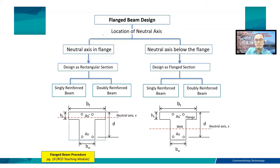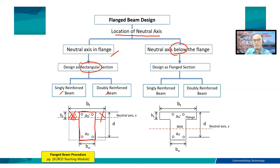The design of a flange beam strongly depends on the location of the neutral axis. If the neutral axis is within the flange, we can design the beam as a rectangular section — either singly or doubly reinforced — using the rectangular section procedure, considering only the width of the beam web. However, if the neutral axis is located below the flange, we design the beam as a flange section, either singly or doubly reinforced, considering the concrete from the slab contributing to resisting compression.